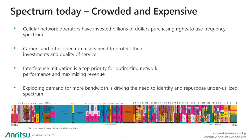Taking this realization while also considering the fact that cellular network operators have invested billions in purchasing the rights to use slots in the spectrum, it's easy to see a couple of things. Firstly, operators need to protect these investments by assuring good quality of service. Secondly, interference mitigation is a top priority in order to optimize network performance and maximize revenue. As demand for capacity increases, so will demand for more bandwidth, and it's very hard to find wide bands of unutilized spectrum below 3 gigahertz.